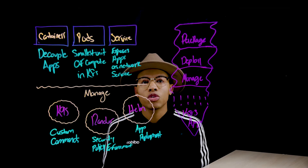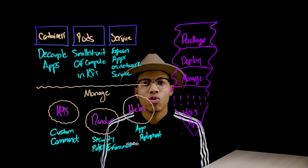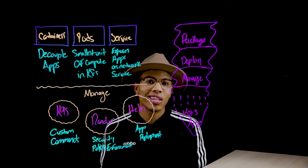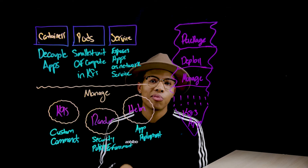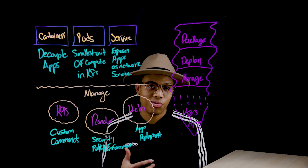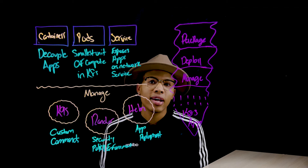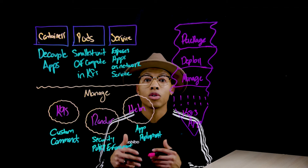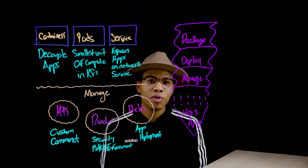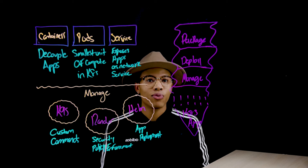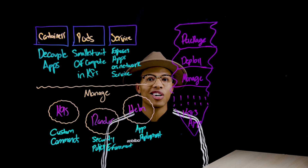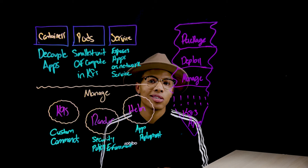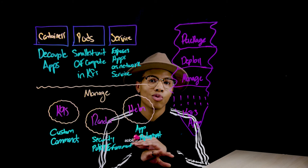Lunar is a digital-only bank out of Aarhus, Denmark, and is an industry disruptor due to their cloud-borne attributes. At Lunar, Kubernetes is the engine behind their use of Humio. And by using the Humio operator for Kubernetes, the uplift needed to manage the deployment is completely removed.